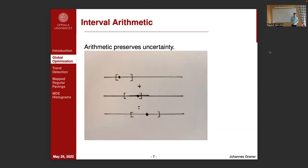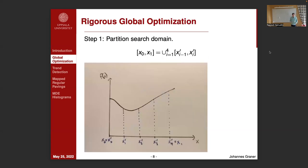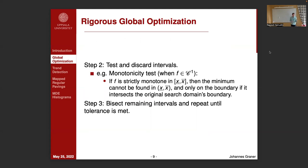We can also do arithmetic on these intervals where we preserve the uncertainty along our computations. To actually do the global optimization, the first step is that we partition our search domain into intervals which overlap only at the boundaries. These intervals in reality will often be multidimensional, but for the sake of visualization, here I only present the case in one dimension.